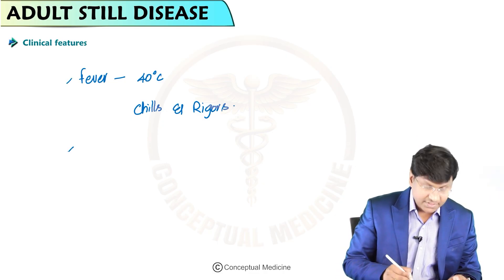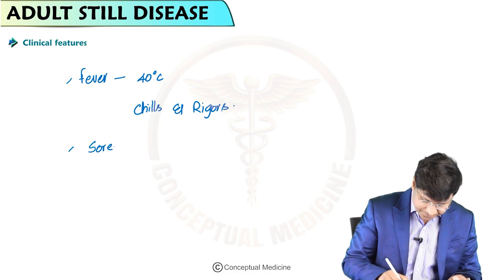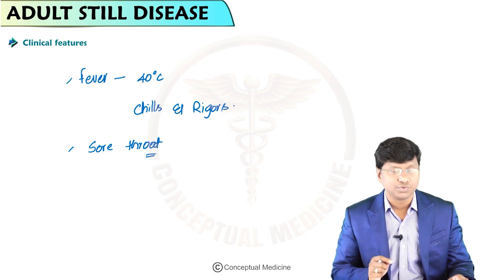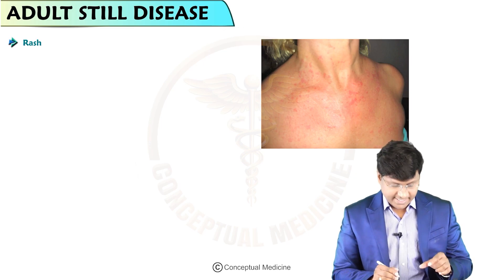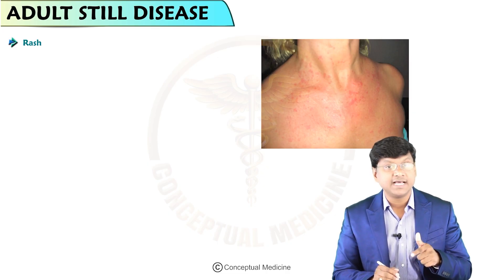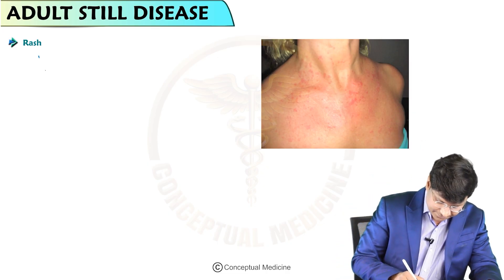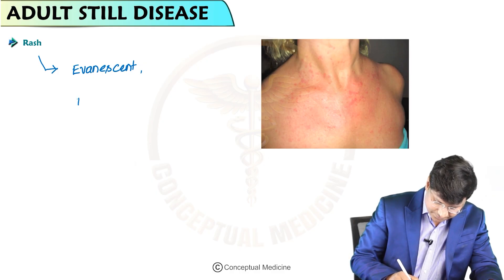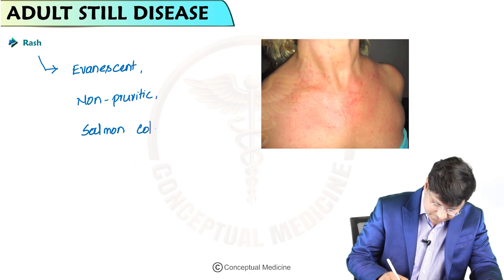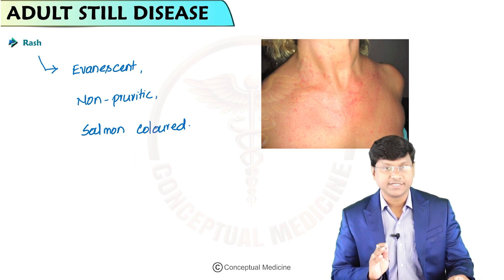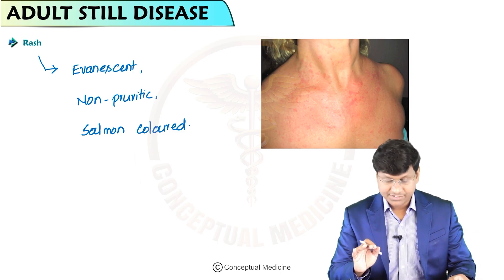These patients also complain of sore throat, where the individual will have discomfort within the throat. Coming to the rash — it is very characteristic in patients with Adult Still's disease. The rash is described as an evanescent, salmon-colored, non-pruritic rash.